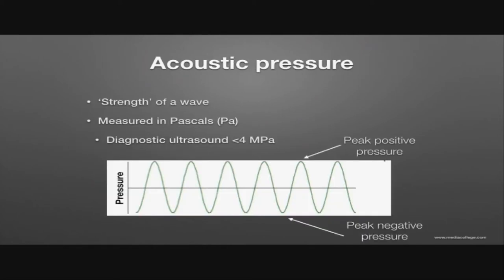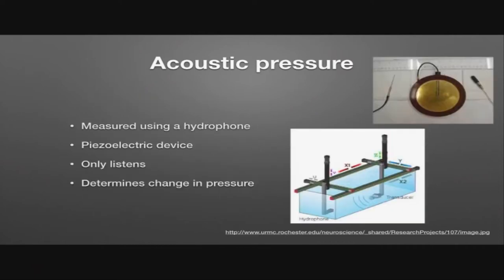Acoustic pressure is the strength of the wave. We typically measure that in pascals. In diagnostic ultrasound, it's less than 4 megapascals. You get a peak positive pressure through compression of the sound wave molecules, as opposed to during rarefaction when those particles are separating, giving you the negative pressure. This is important when considering the mechanical effects on tissue. We can measure acoustic pressure using a hydrophone — a piezoelectric crystal device that only listens and doesn't transmit ultrasound — placed in a bath with the transducer to determine the change in pressure.